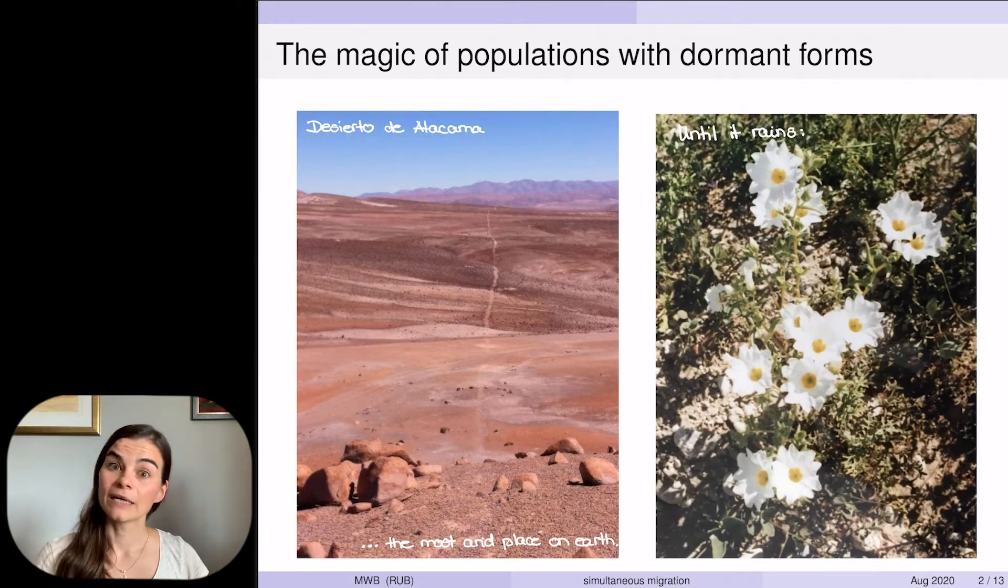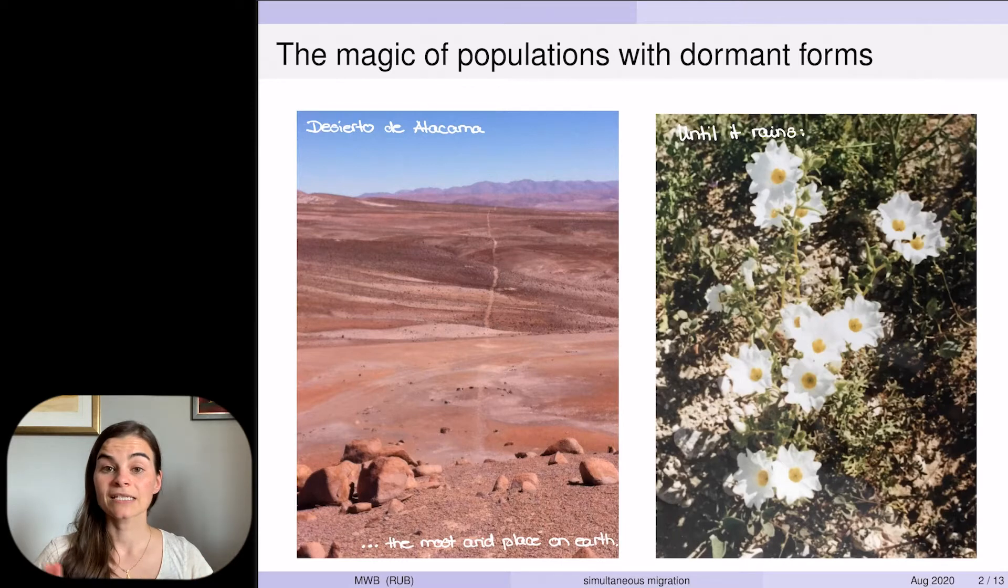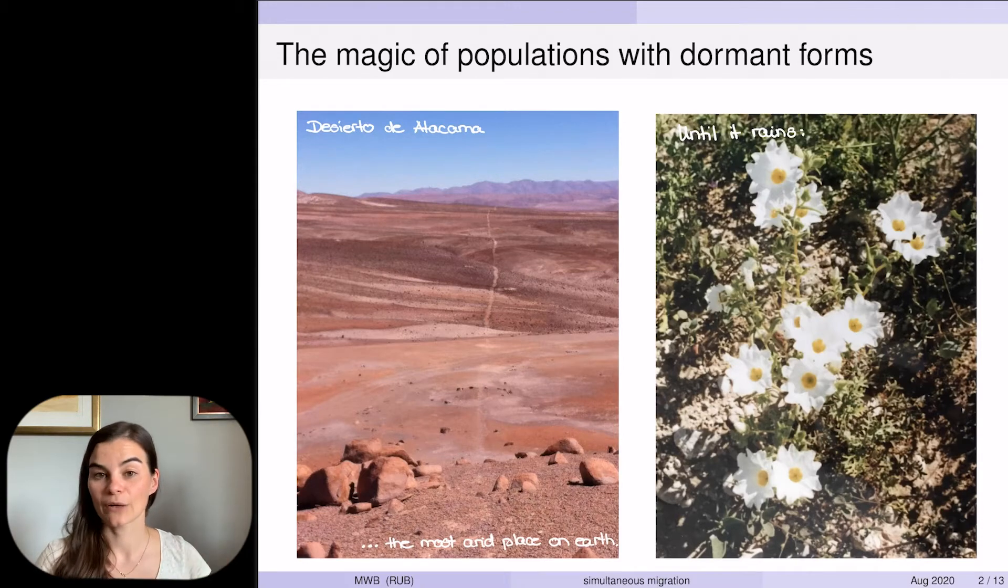We developed a Wright-Fisher type model for a population where individuals can transition in and out of the dormant state, either independently or like the flowers in the desert after the rain, simultaneously. I will explain both mechanisms and then study their impact on the property of coming down from infinity.